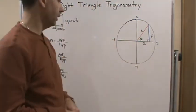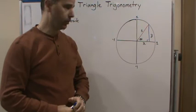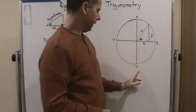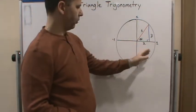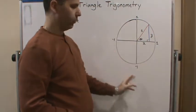So before we do that, let's talk about the unit circle. So a unit circle is a circle that's centered at the origin with a radius of one.